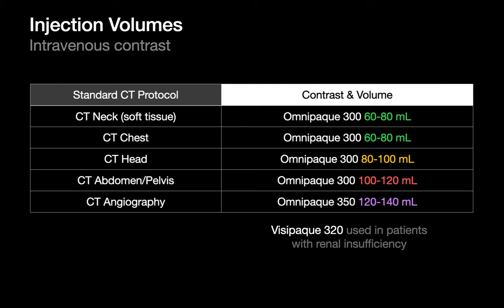IV contrast volumes vary depending on what is being scanned. For routine enhanced neck and chest CTs, volumes may be around 60–80 mL; for head CT, around 80–100 mL; for abdominal CTs, around 100–120 mL; and for CT angiograms, up to 120–140 mL.